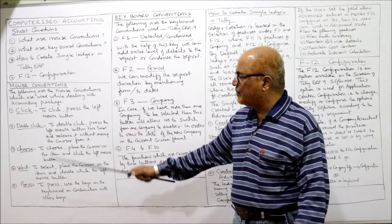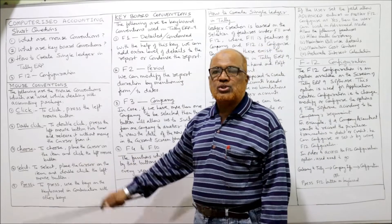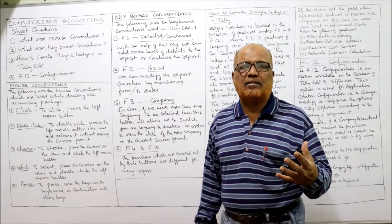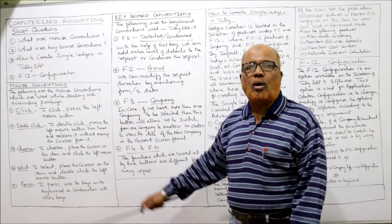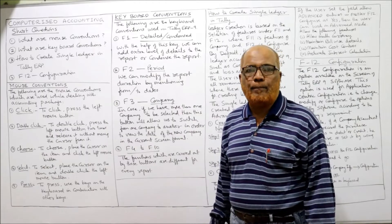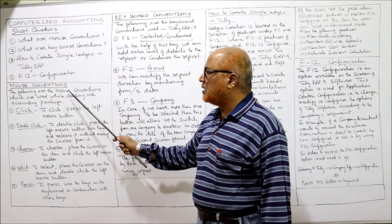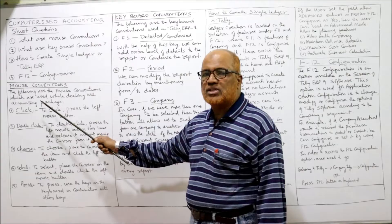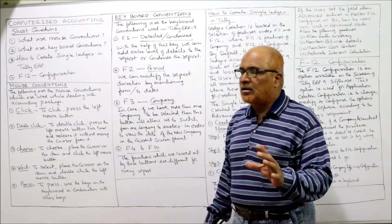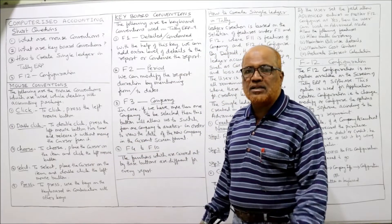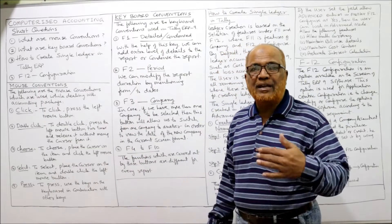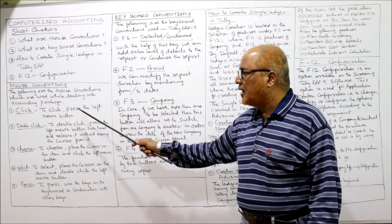Conventions means the rules or principles — how to operate the mouse in an accounting package. The following are the mouse conventions used while dealing with an accounting package. The first convention is 'click.' Click means to press the left button of the mouse.